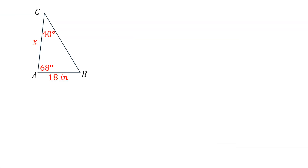Let's try another example. We have triangle ABC with a side of 18 inches, an unknown side x, and two given angles: 40 degrees and 68 degrees. The 40-degree angle is paired with its opposite side of 18 inches. However, x does not yet have a paired angle — the 68-degree angle is not the pair of x, so that angle is missing.